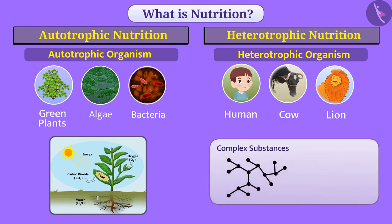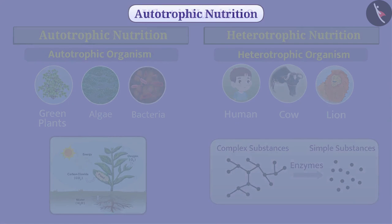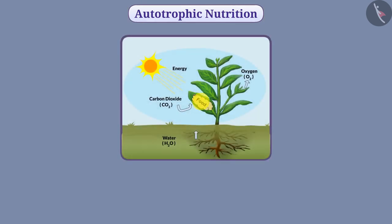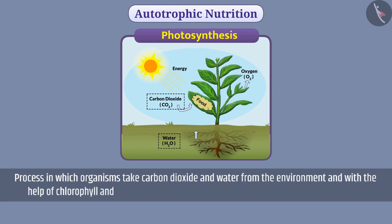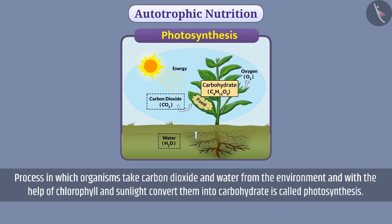Heterotrophic organisms eat complex substances and with the help of various biocatalysed enzymes, they break complex substances into simple substances and obtain their nutrition. In autotrophic nutrition, organisms make their own food through the process of photosynthesis. The process in which organisms take carbon dioxide and water from the environment and with the help of chlorophyll and sunlight convert them into carbohydrates is called photosynthesis. They get their energy requirement from the carbohydrates.